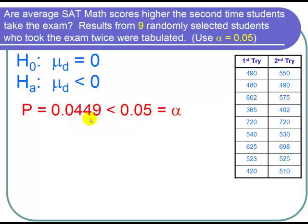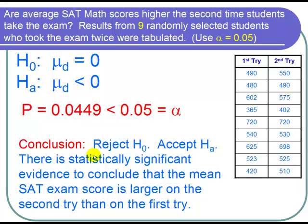When we have a small p, our conclusion is to reject H₀, accept Hₐ, and say that there is statistically significant evidence to conclude that the mean SAT exam score is larger on the second try than on the first try. And I'm done with the problem.